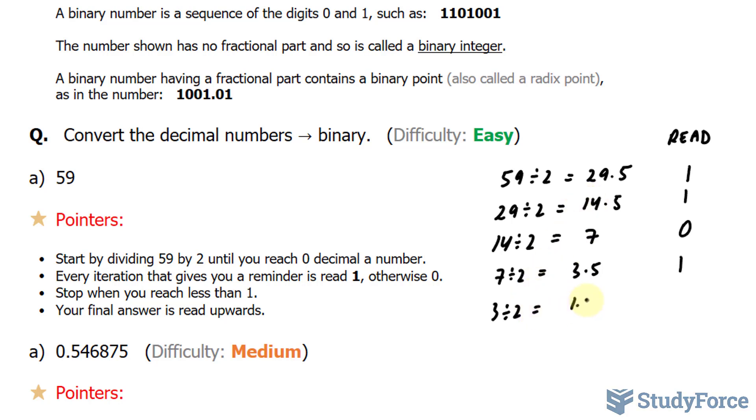3 divided by 2 is 1.5, that's another remainder. Taking only 1, 1 divided by 2 is 0.5, and 0.5 gives us a remainder. Therefore, that is read as 1. Now that we've reached a number less than 1, as outlined in the pointers, we stop. Notice that we've stopped at 0.5. Once you get to that point, you will read this upwards. And that's another pointer here, where I say your final answer is read upwards. Therefore, 59 is 1, 1, 1, 0, 1, 1 in binary.